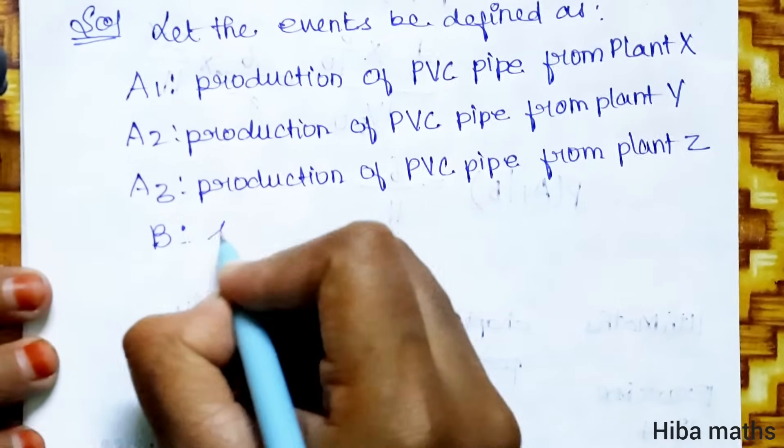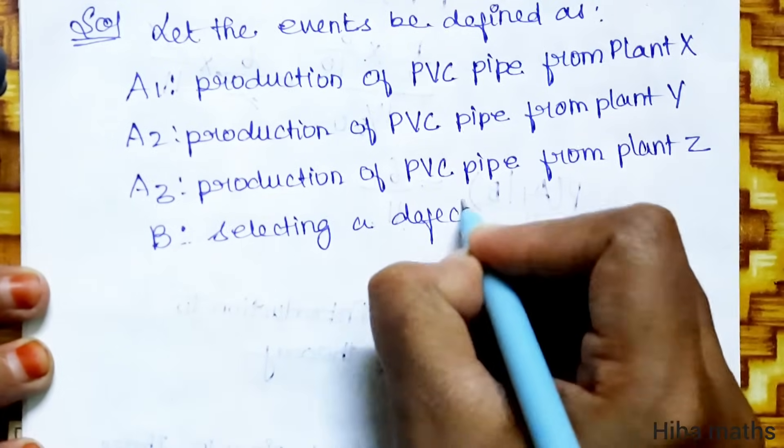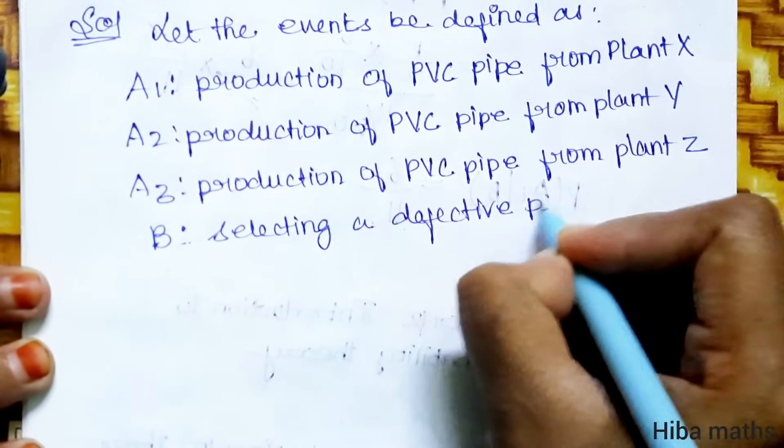So, B is defective, so B is selecting a defective pipe.